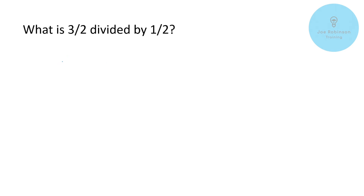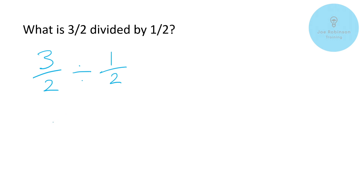We've got three over two divided by one over two — three halves divided by one half. You may notice we've got what's referred to as an improper fraction on the left-hand side. That makes no difference whatsoever to this calculation. The only thing to watch out for is if you have a mixed fraction instead, as you'll need to convert it into an improper fraction — a top-heavy fraction — before applying this method.